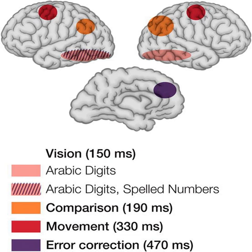Cooper and Shepard presented a letter or digit that was either normal or mirror-reversed, and presented either upright or at angles of rotation in units of 60 degrees. The subject had to identify whether the stimulus was normal or mirror-reversed. Response time increased roughly linearly as the orientation of the letter deviated from upright (0 degrees) to inverted (180 degrees), and then decreased again until it reached 360 degrees. The authors concluded that the subjects mentally rotate the image the shortest distance to upright, and then judge whether it is normal or mirror-reversed.